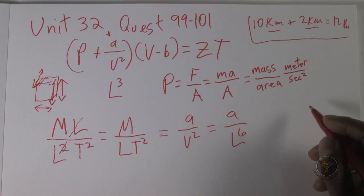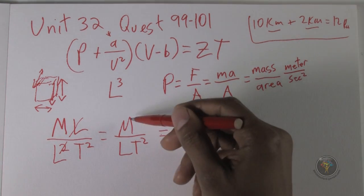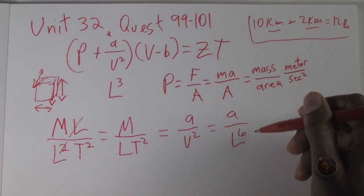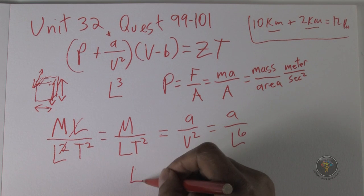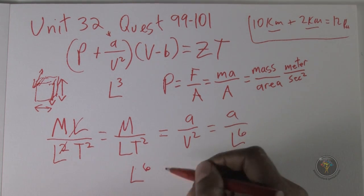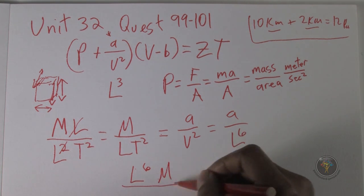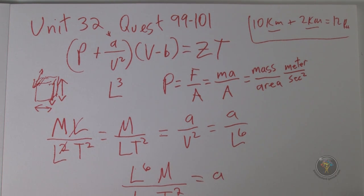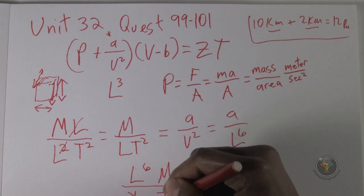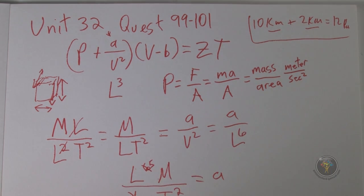So we have A over L to the power of 6 is equal to this. I'll multiply both sides by L to the power of 6. I have L to the power of 6 times M over L time squared, and that is the dimensions of A. I just cross out L here, cross one out here. I have L to the power of 5, M, T to the power of minus 2. And that is the answer. 100 is B. The answer is B.